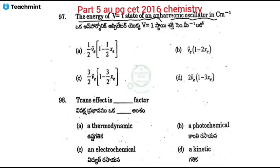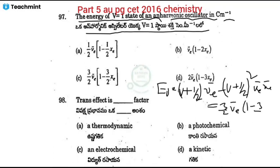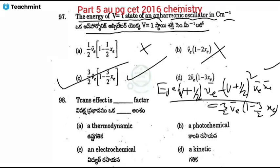Next: energy of V=1 state of an anharmonic oscillator. For an anharmonic oscillator, energy E = (V + ½)νe − (V + ½)² νe Xe. For V = 1, substituting gives E = (3/2)νe − (3/2)² νe Xe = (3/2)νe − (9/4)νe Xe. Option C is the correct answer.